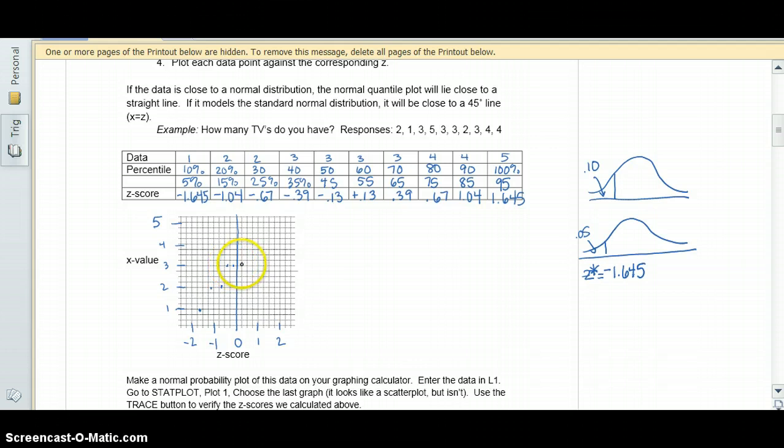And we had positive 0.13, positive 0.39, positive 0.67, positive 1.04, and 1.645, which is about here.